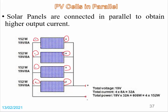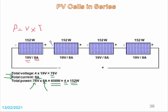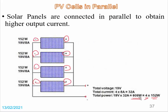Using the same panels producing 19 volts and 8 amperes each: in a parallel connection the total voltage remains 19 volts. The total current is the sum of the current from each panel, so 4 multiplied by 8 equals 32 amperes. The total power is 4 multiplied by 152 equals 608 watts — the same as the series connection.